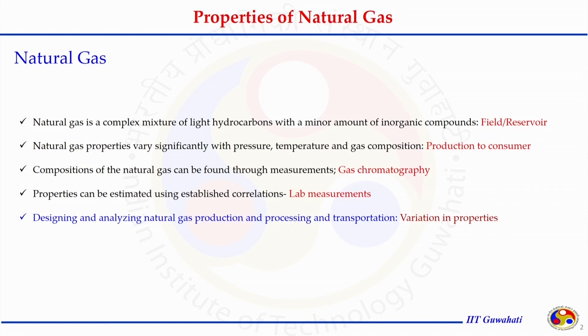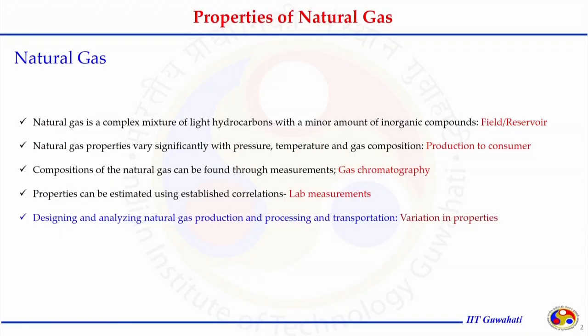Natural gas is a complex mixture; the composition depends on the field and reservoir, varying from light hydrocarbons from C1 up to C7, along with non-hydrocarbon gases like CO2, N2, H2S, and trace amounts of SO2 and others. Some of these gases need to be treated before sending to the consumer.